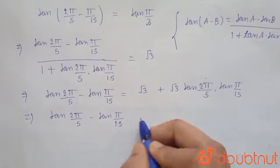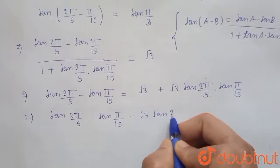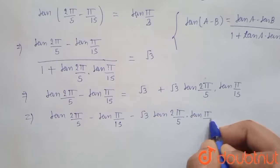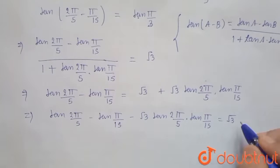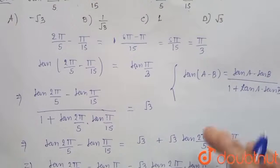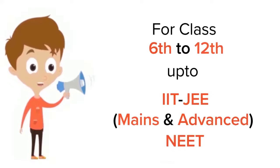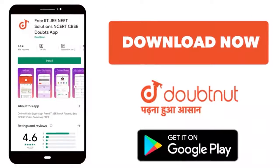equals √3. This is what we have to find, so this is our answer. Hence, option D is correct. For class 6 to 12, IIT JEE and NEET level, trusted by more than 5 crore students, download Doubtnut app today.